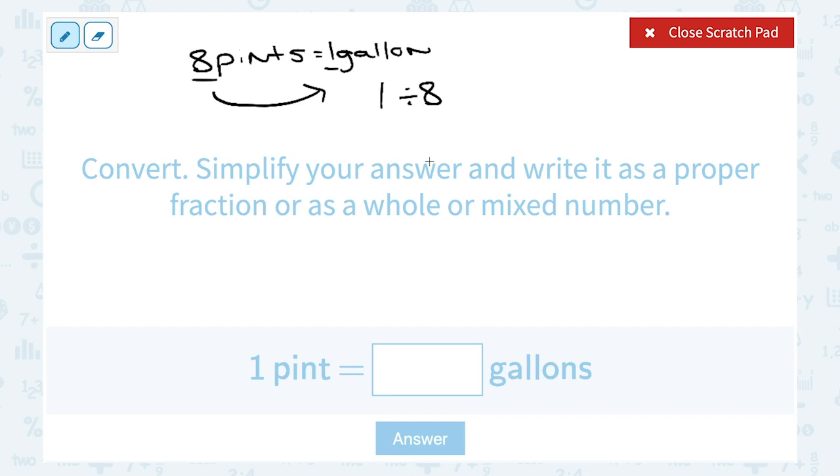Well remember, divisions mean the same thing as fractions. One divided by eight has the exact same meaning as one over eight, right? We can think of this as one divided by eight. So that means one pint is one eighth of a gallon.